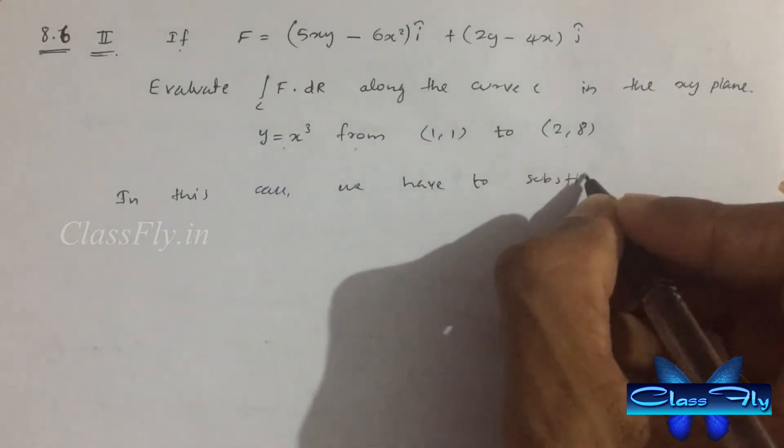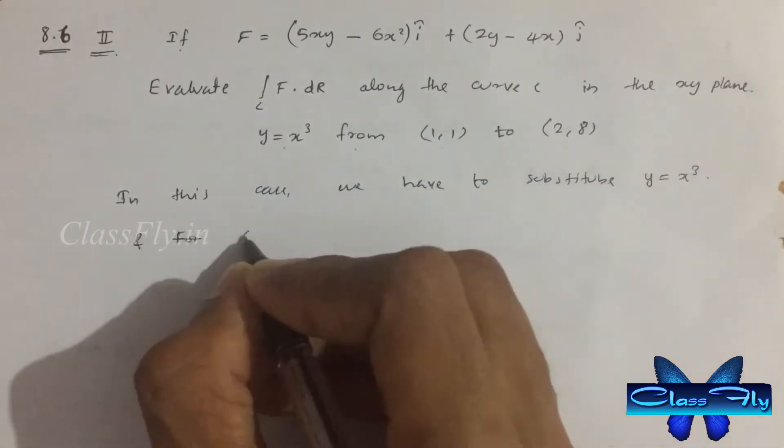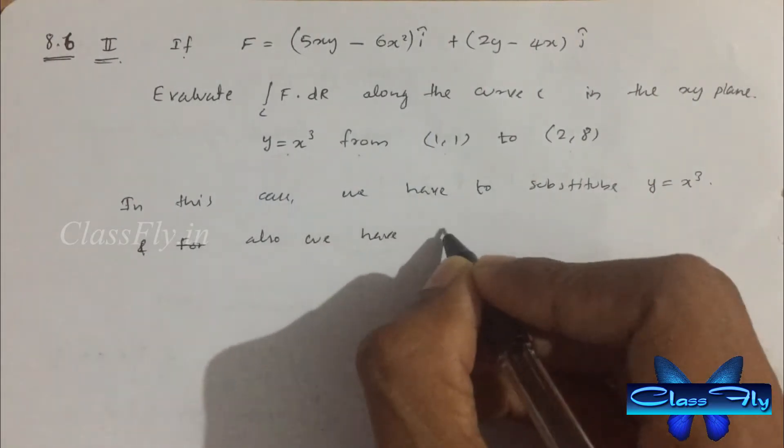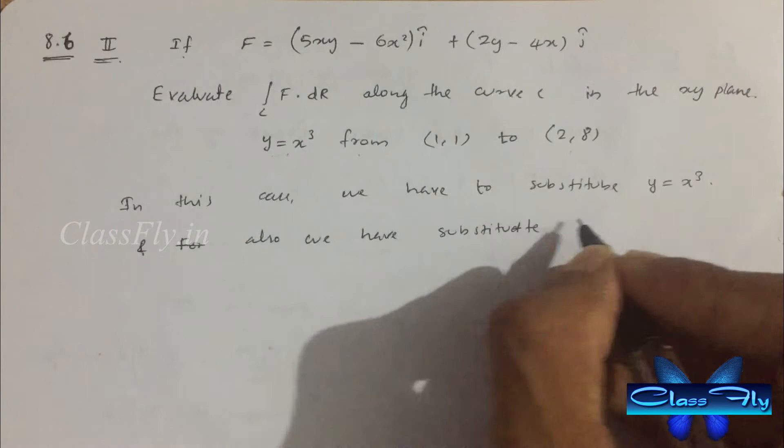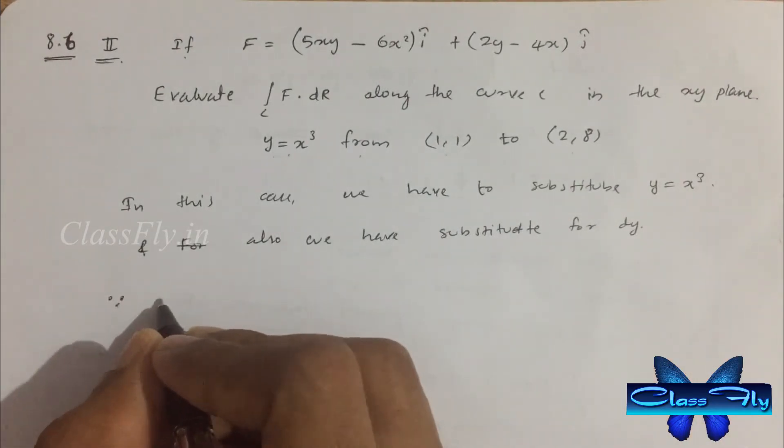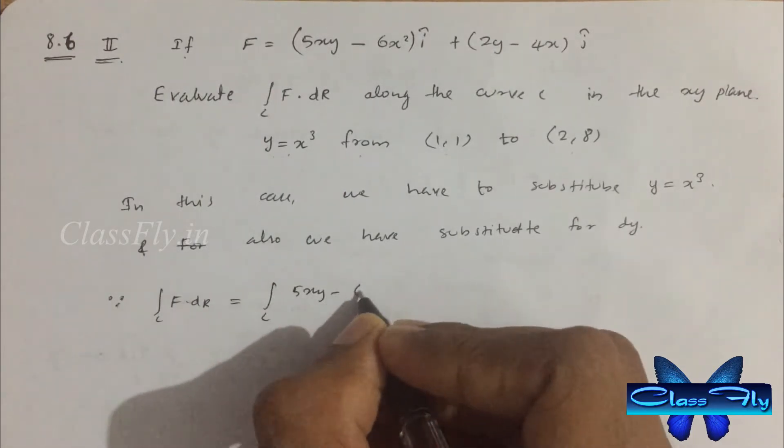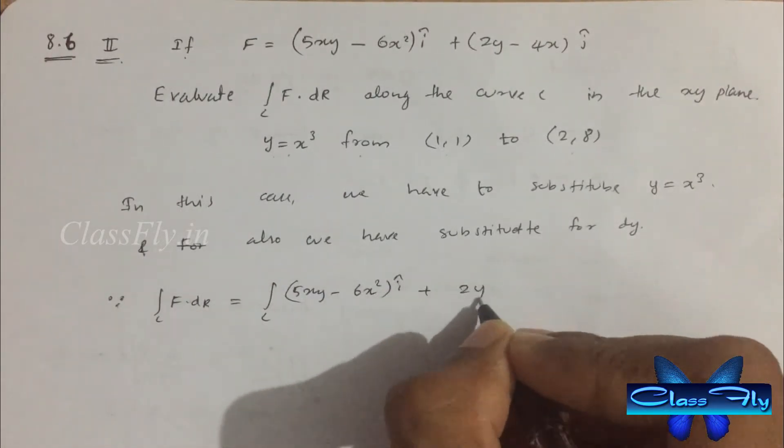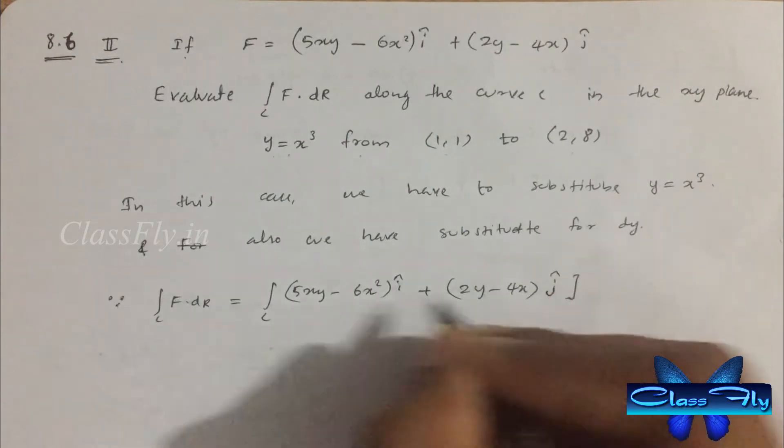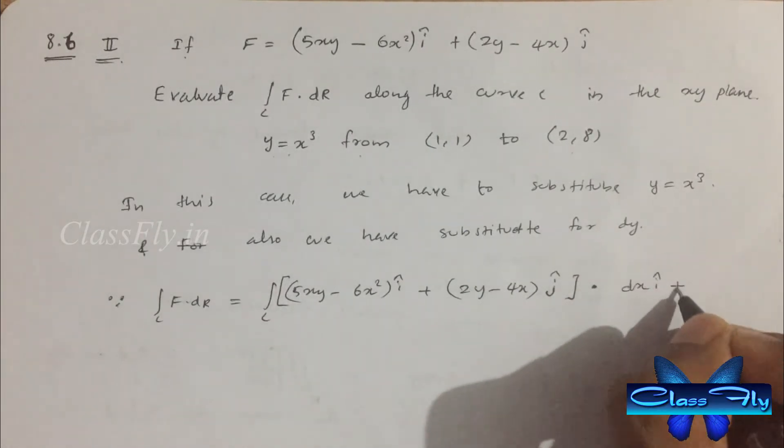In this case we have to substitute y equal to x cube. Also we have to substitute for dy since integral c f dot dr is equal to integral 5xy minus 6x square i cap plus 2y minus 4x j cap dot dx i cap plus dy j cap.